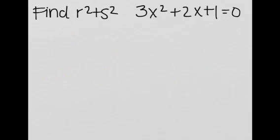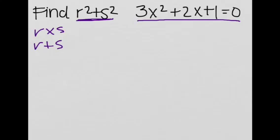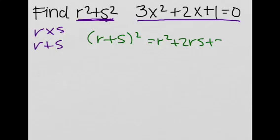Now let's look at a harder example. We are supposed to find r squared plus s squared for the equation 3x squared plus 2x plus one is equal to zero. This might be a little confusing because all we know how to find is r times s and r plus s. How are we going to find r squared plus s squared? Well, fear not. We can use the fact that r plus s squared equals r squared plus 2rs plus s squared, and we know what 2rs is and what r plus s squared is, which means we can find r squared plus s squared.